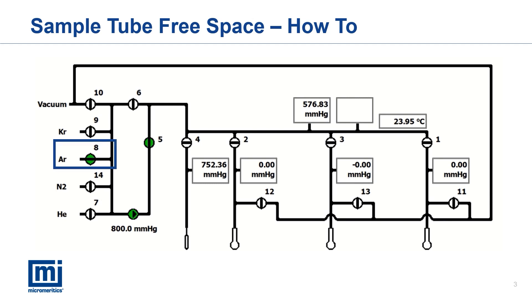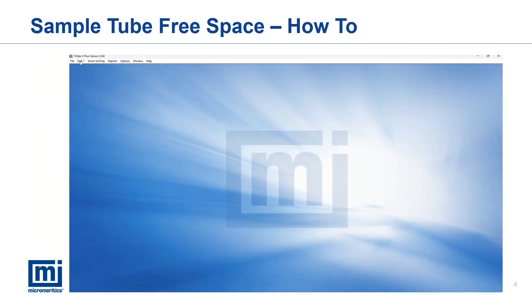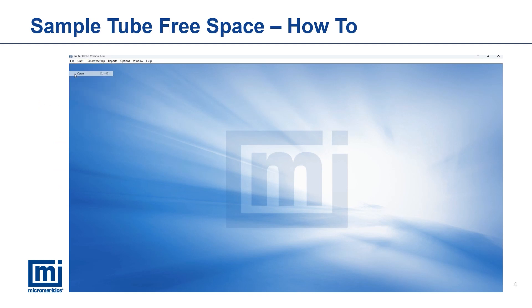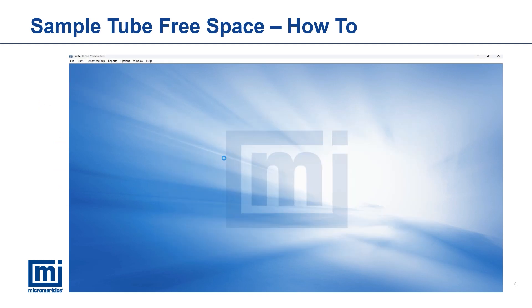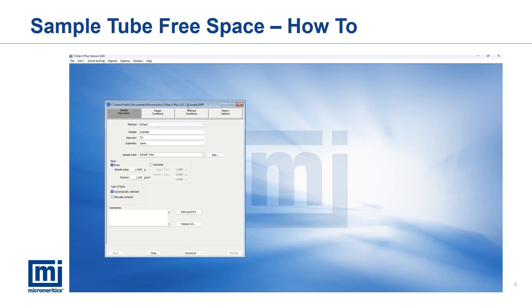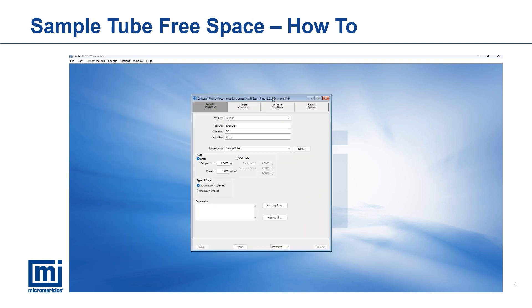After sample tube free space analysis is done, open the SMP file that would be used for testing. To apply the sample tube free space for analysis, on the sample description tab, select the calibrated sample tube from the sample tube drop-down menu.